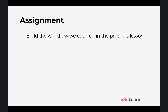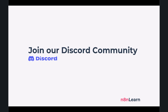Your assignment for this lesson is straightforward: build the exact workflow we covered in the previous lesson. Create a new Google Sheet with the same columns as the lead sheet provided. Use the Google Sheets node to read data from your sheet, connect a Gmail node, and in the subject field add whatever you want. In the "To" field, pull in the lead's email address dynamically. Don't worry about sending the emails just yet — the goal is to get the workflow built and expressions written correctly. If you get stuck, ask away in our Discord group. That's it for today's lesson. In the next lesson, we're going to move on to actually building your first live automation. I'll see you there.